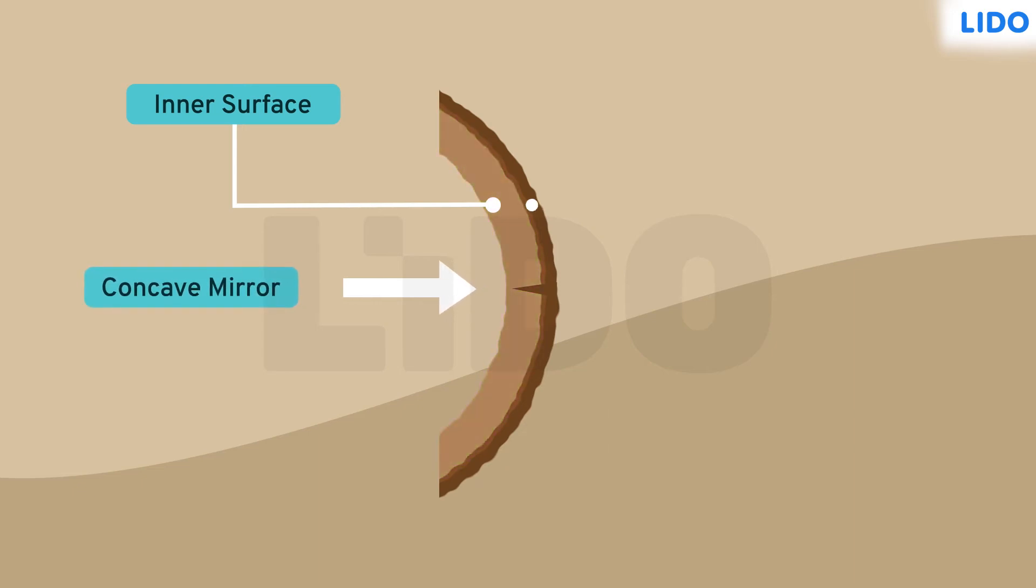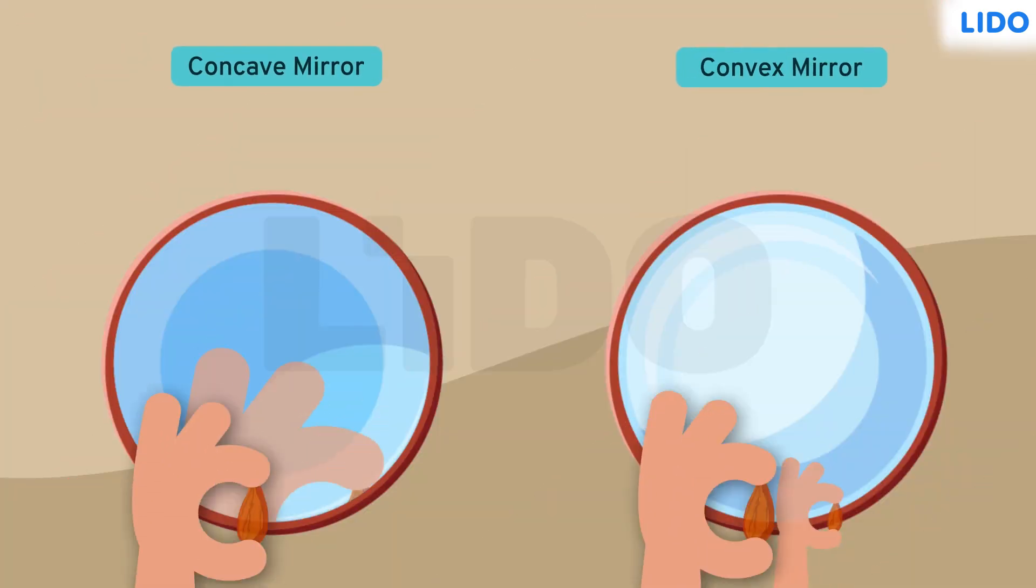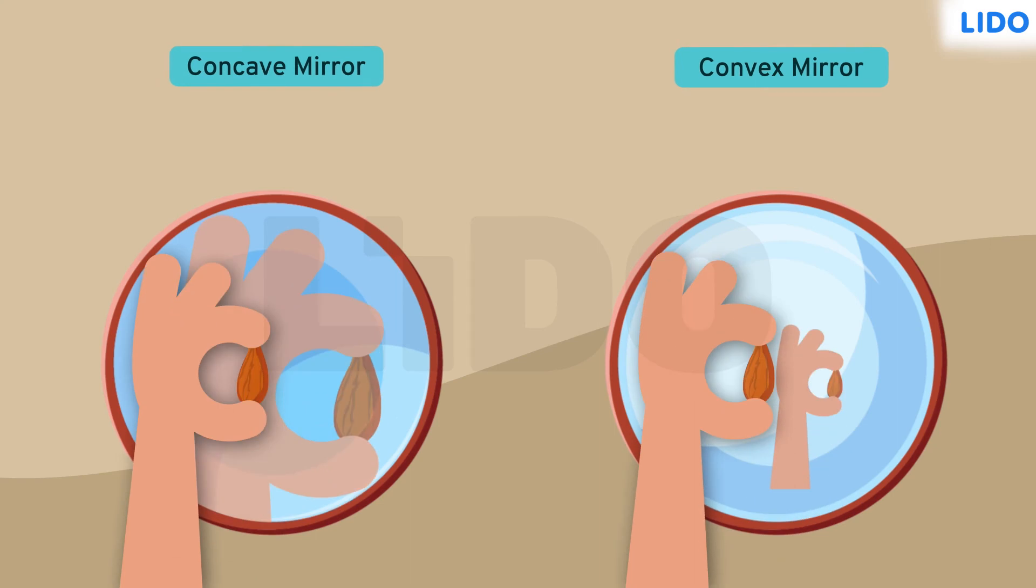If you coat the outer surface with a reflecting material, it becomes a convex mirror. Let us hold a nut in front of both the concave and convex mirrors. The image obtained in the concave mirror is a magnified image, while it diminishes the image in the convex mirror, meaning smaller in size.